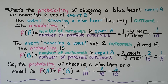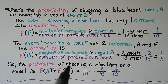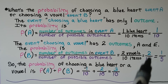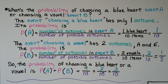The probability of choosing a blue heart or a vowel is the probability of event A plus the probability of event B: 1/10 plus 2/10 equals 3/10. To choose a blue heart or a vowel, we have a 3 out of 10 chance. There is one blue heart, two vowels, and 10 items total.